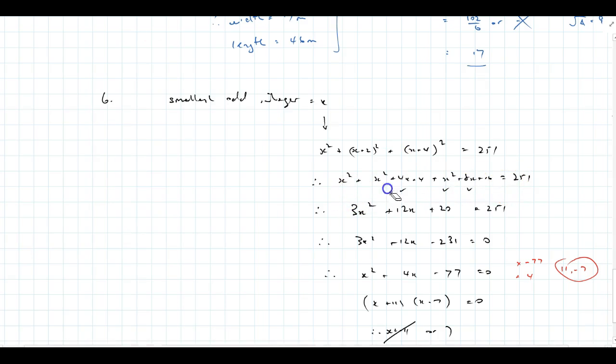You can see my working out here with ticks. We get 3x squared plus 12x plus 20 equals 251. Bring that 251 over. There's my working through there. Divide by 3.